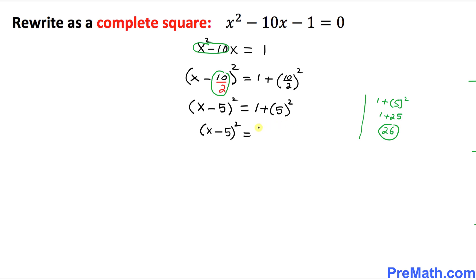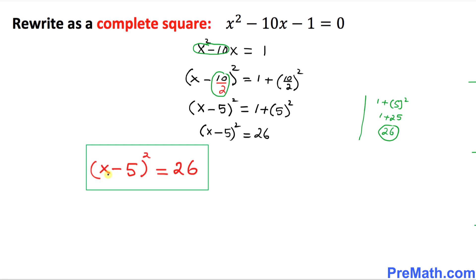If you simplify it, that's going to give you 26. Thus our answer as a complete square turns out to be x minus 5 squared equal to 26.